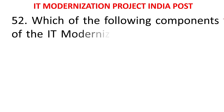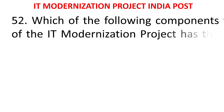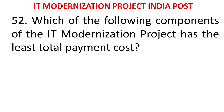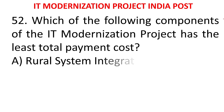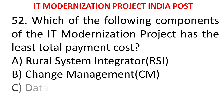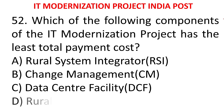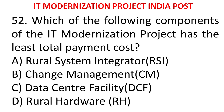MCQ 50: Which of the following components of the IT modernization project has the least total payment cost? Rural system integrator, change management, data center facility, or rural hardware. The answer is change management. Change management has the lowest cost among all eight segments - it is less than 40 crores.